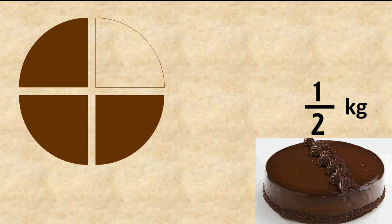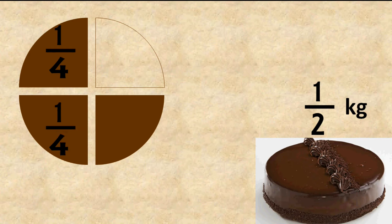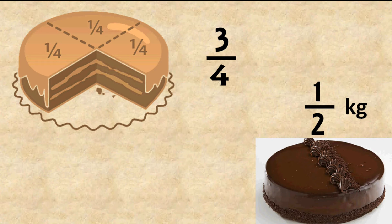You took three parts — so what is the total weight of those three pieces? The cake was divided into four equal parts and you took one part, so it is one-fourth. Three parts means three-fourths. So we need to find three-fourths of half a kg.